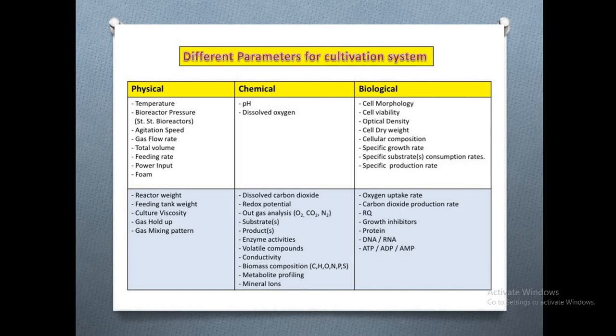The chemical parameters to be monitored include pH, dissolved oxygen — which is very important — and dissolved carbon dioxide. Also included are redox potential, outgas analysis (the gases coming out of the fermenter such as oxygen, carbon dioxide, or nitrogen), substrate and product conditions, enzyme activities, volatile compounds, conductivity, and biomass composition.